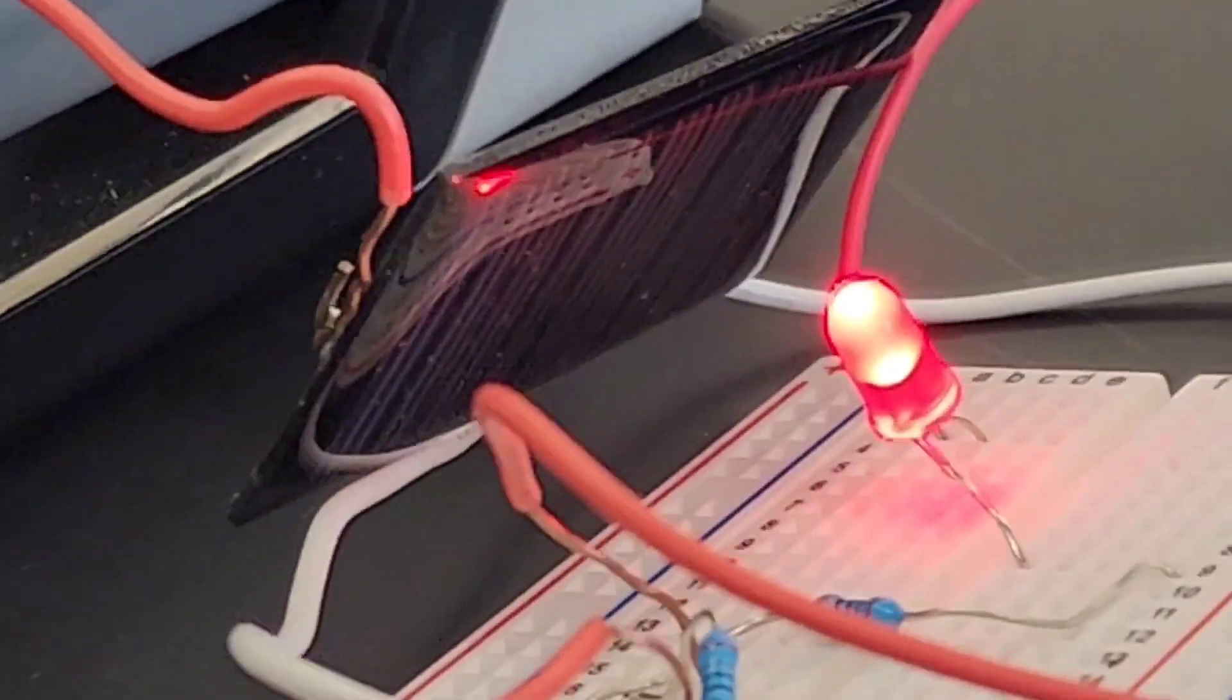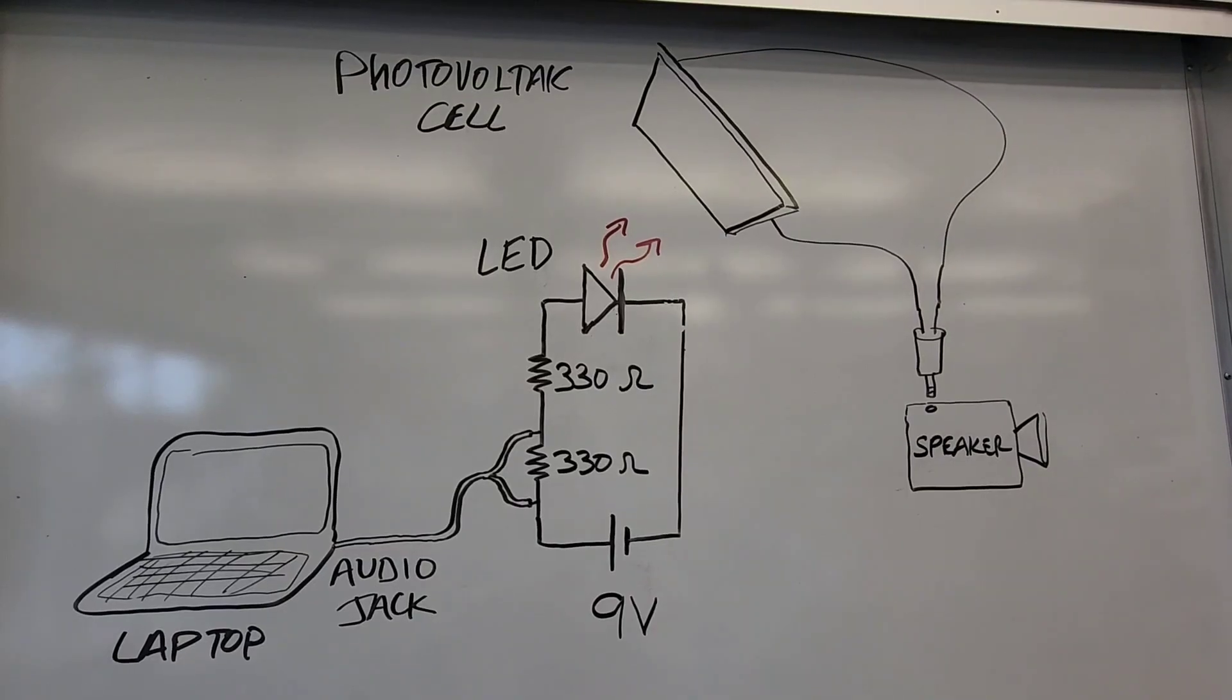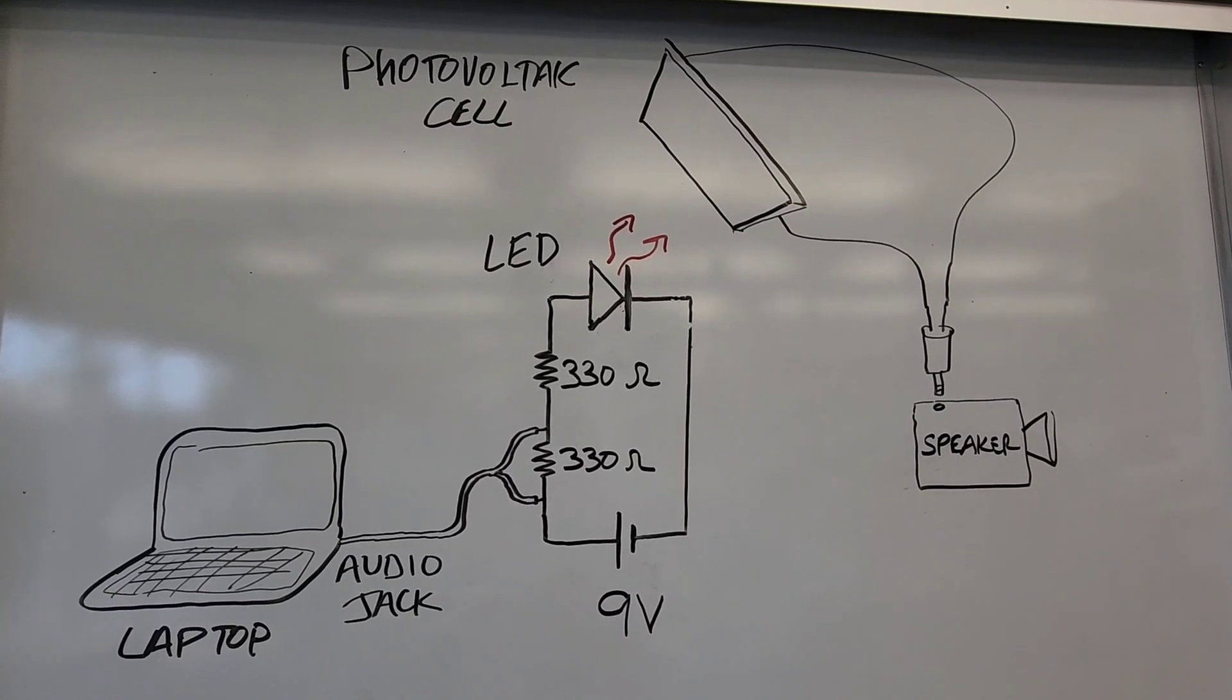Interestingly enough, the photovoltaic cell is picking up signal coming from my cell phone when it's directed toward the photovoltaic cell, even without the LED.